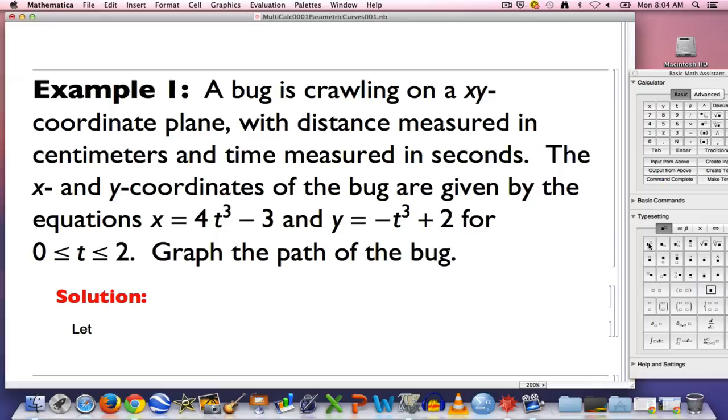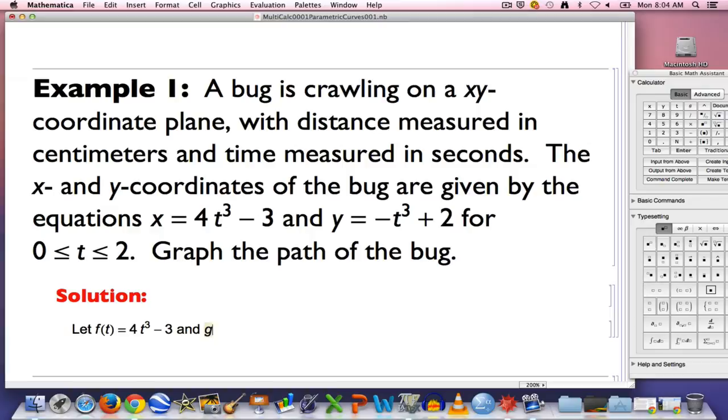I'm going to define function names. I'm going to call the first function f and the second function g. I'm going to let f be defined by the right hand side of the x equation here. So for a given input t, 4t³ - 3 is going to be the output, and I'm going to let a function g be defined by the right hand side of the second parametric equation, this one here.